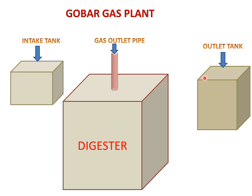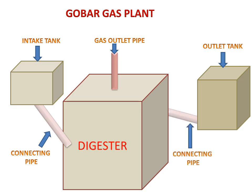A very simple mechanism is used for producing gas from the gobar gas plant. This is the connecting pipe from the intake tank to the digester, and this is the connecting pipe from the outlet tank to the digester.